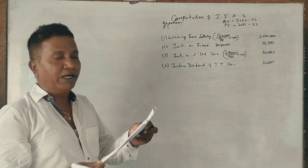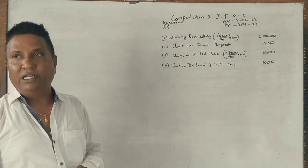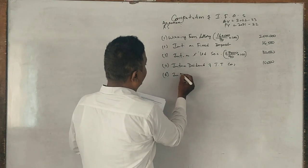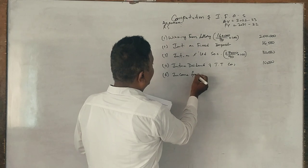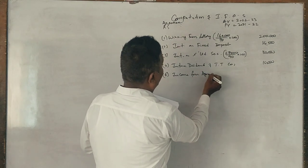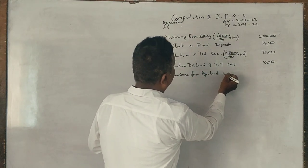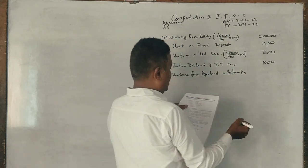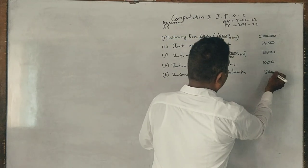Income from agricultural land in Sri Lanka, 15,000, fully taxable.